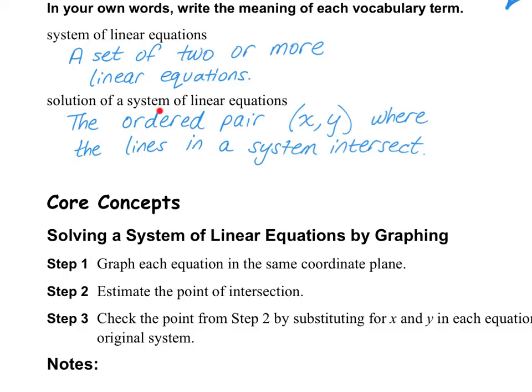The solution of a system of linear equations is the ordered pair (x, y) where the lines in the system intersect. It is important that you write your answer as (x, y) as a point. A lot of students will want to just say x equals something and y equals something, and that's technically not quite correct. You do want to write your answer as an (x, y) point, because that is what it is.